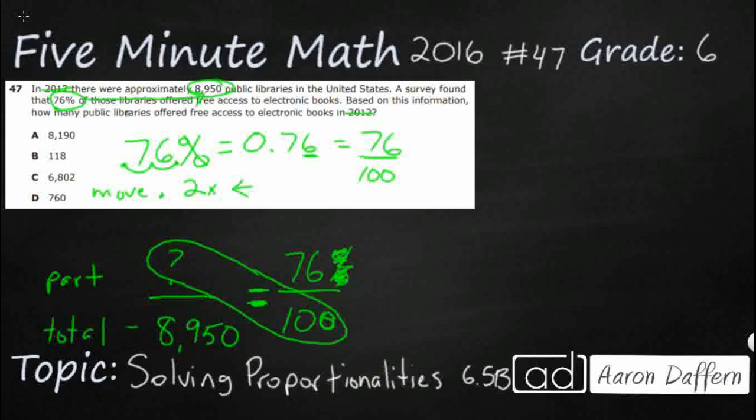So, something, this missing number times 100 is going to equal 8,950 times 76. So, let's see what 8,950 times 76 is. That's going to be our first and our biggest type of operation we are going to have to do here.